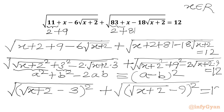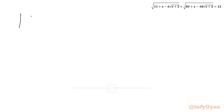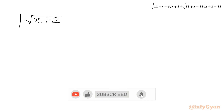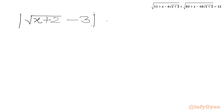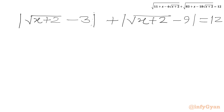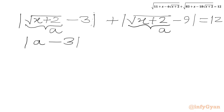The right-hand side equals 12. Now we know that square root of k squared equals the absolute value of k. Applying this result, we write mod of square root of x plus 2 minus 3, plus mod of square root of x plus 2 minus 9, equal to 12. Setting a equal to square root of x plus 2, our equation becomes mod of a minus 3 plus mod of a minus 9 equal to 12.